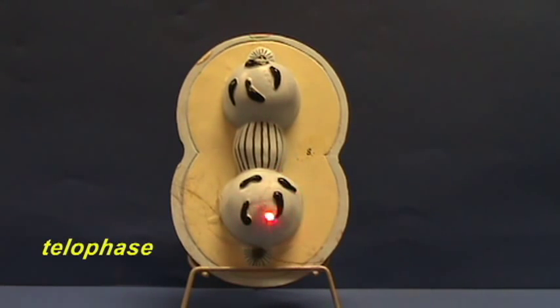Telophase, where the chromosomes have now separated from one another, moved to opposite ends of the cell. You can still see that microtubules of the spindle apparatus are connecting the two regions where the chromosomes have moved.